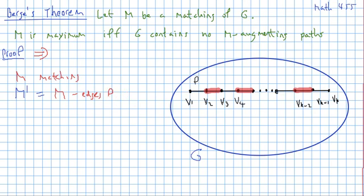So we subtract the edges in this augmenting path p and we add the edges in p that are not in m. So we would replace all these edges by the complement of the edge, by the edges that are not there.